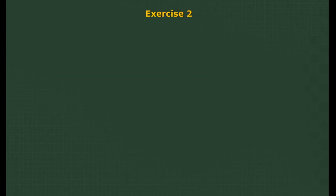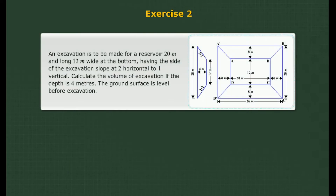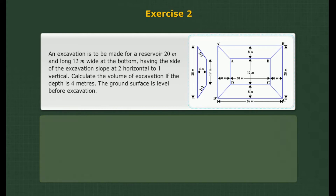Problem: An excavation is to be made for a reservoir 20 metres long, 12 metres wide at the bottom, having the side of the excavation slope at 2 horizontal to 1 vertical. Calculate the volume of excavation if the depth is 4 metres. The ground surface is levelled before excavation.